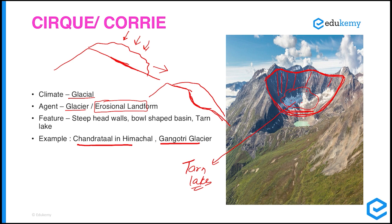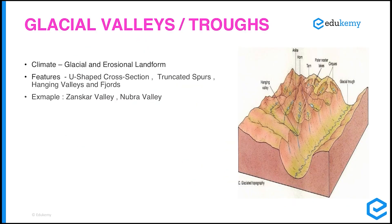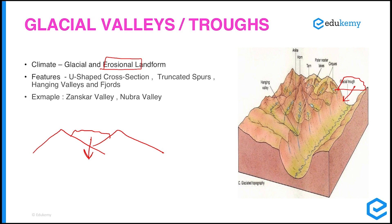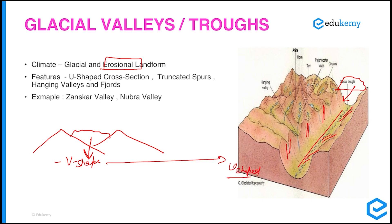Glacial valleys also come within the category of erosional landforms. A glacier moving downward under its own weight and gravity erodes the landscape, leaving steep side slopes on either side of the valley. Earlier the valleys are V-shaped, but the glacier transforms them into U-shaped valleys. That is why glacial valleys or troughs are also called U-shaped valleys.